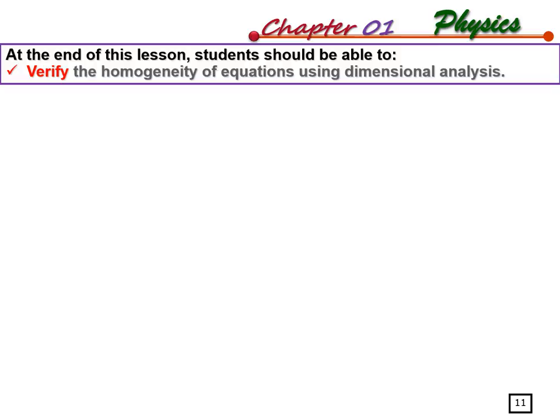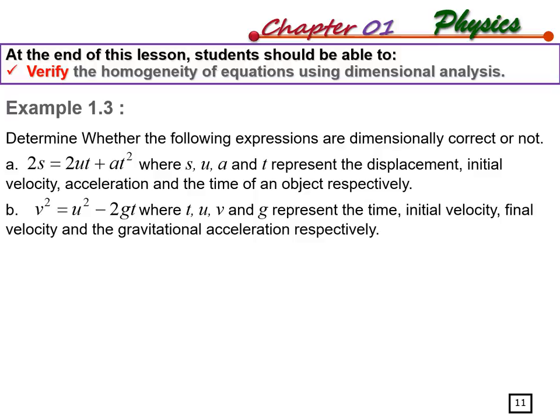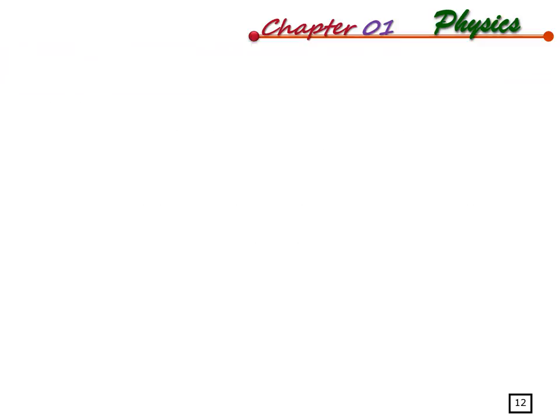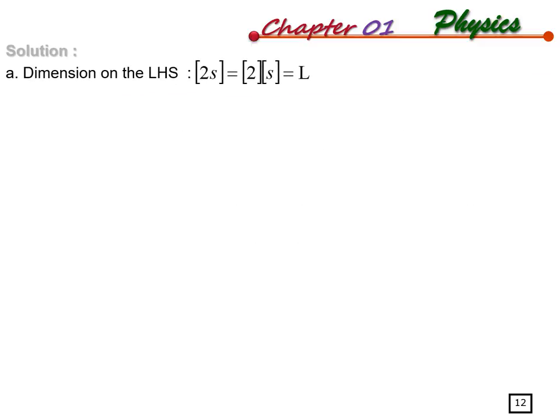Now we verify homogeneity - determining whether an equation is in a homogeneous condition. For Example A: the expression 2s = 2ut + at², where s is displacement, u is initial velocity, a is acceleration, and t is time. Looking at the left-hand side: 2s - since 2 is a constant its dimension is 1, so we get dimension L.